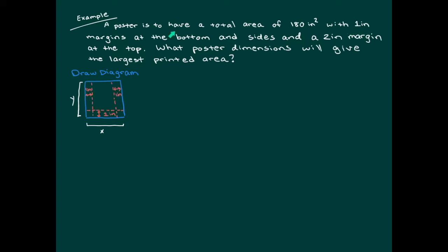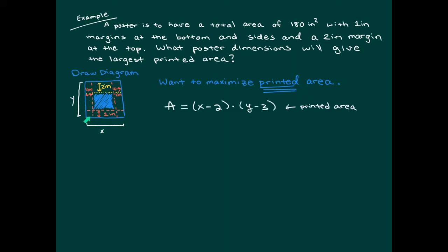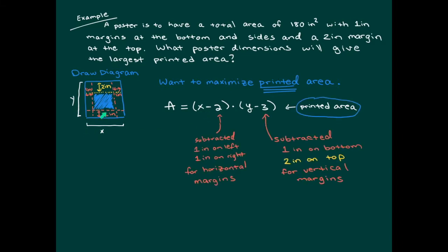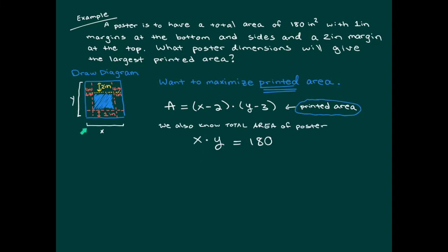The poster has a one-inch margin at the bottom and sides, and a two-inch margin at the top. The printed area is the shaded region inside the margins. The printed width is x minus 2 (one inch each side), and the printed height is y minus 3 (one inch bottom, two inches top). We also know from the problem that the total poster area x times y equals 180 square inches.